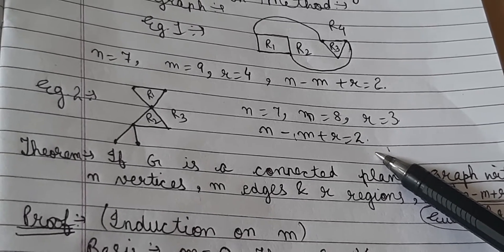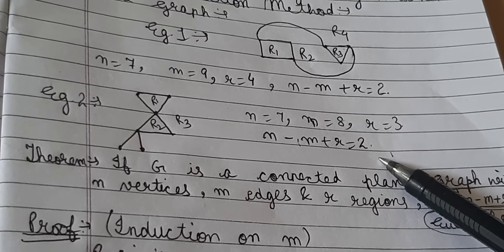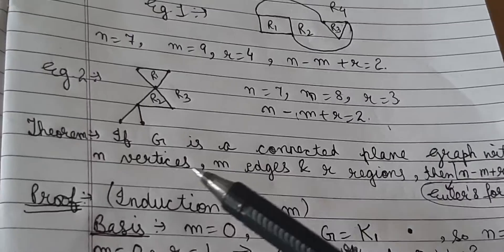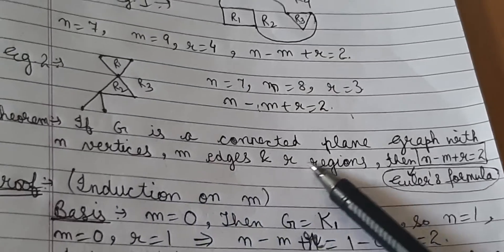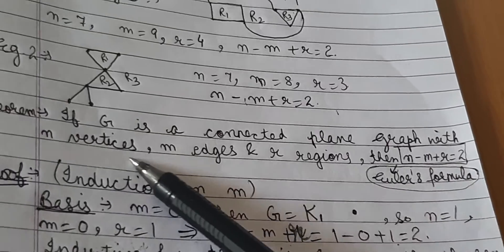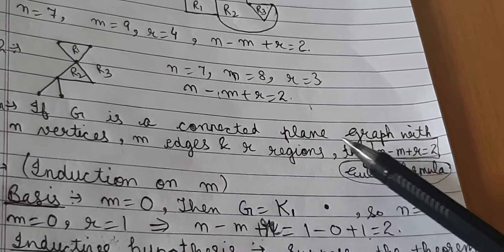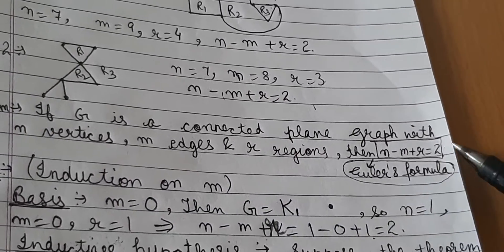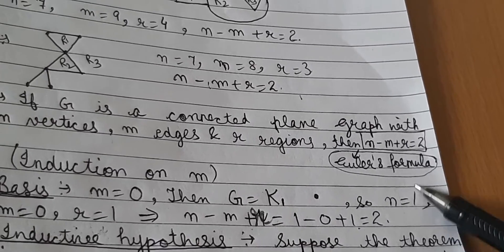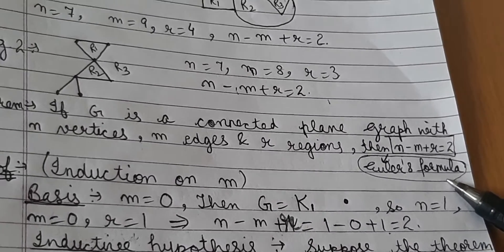It holds for every connected plane graph. So the theorem we want to prove: if G is a connected plane graph with n vertices, m edges and r regions, then n minus m plus r equals 2.